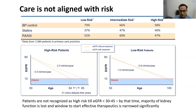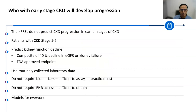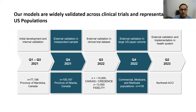If you have a high-risk 50-year-old with a GFR of 80 progressing at 5 mL/min/year, they'll be on dialysis at 64 on RAS inhibitor only. If you get that patient on an SGLT2 inhibitor and finarenone, they're going at 2 mL/min/year and may be on dialysis at 85 — or possibly never. You have an opportunity to transform a patient's life if picked up early. So we developed new models — we wanted to make models for 40% decline in GFR or kidney failure, which is an FDA-approved endpoint, using routinely collected lab data. Models widely validated across clinical trials and representative U.S. populations: developed in 77,000 people in Manitoba, validated in 100,000 in Alberta, 14,000 in Canvas and Credence, 13,000 in Fidelity, and 4.6 million U.S. adults.